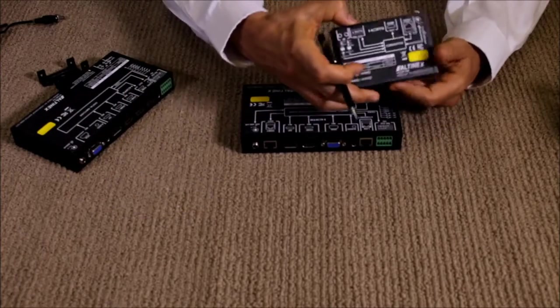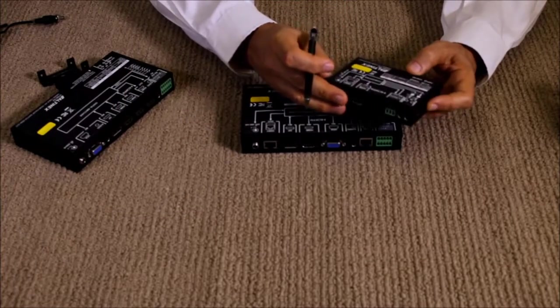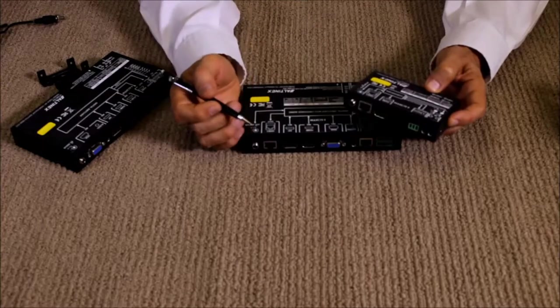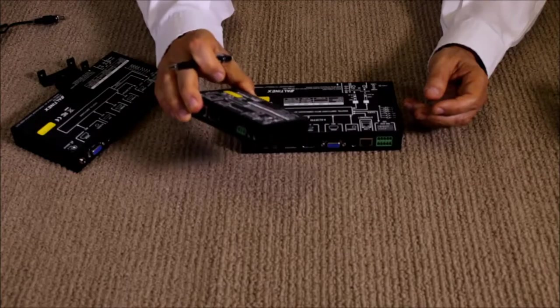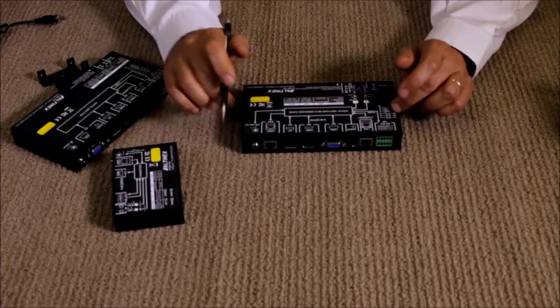And this is HDBaseT receiver, which is the UT260-104. This would go right next to the projector or a large screen display up to 200 feet away. And this would be mounted under the table.